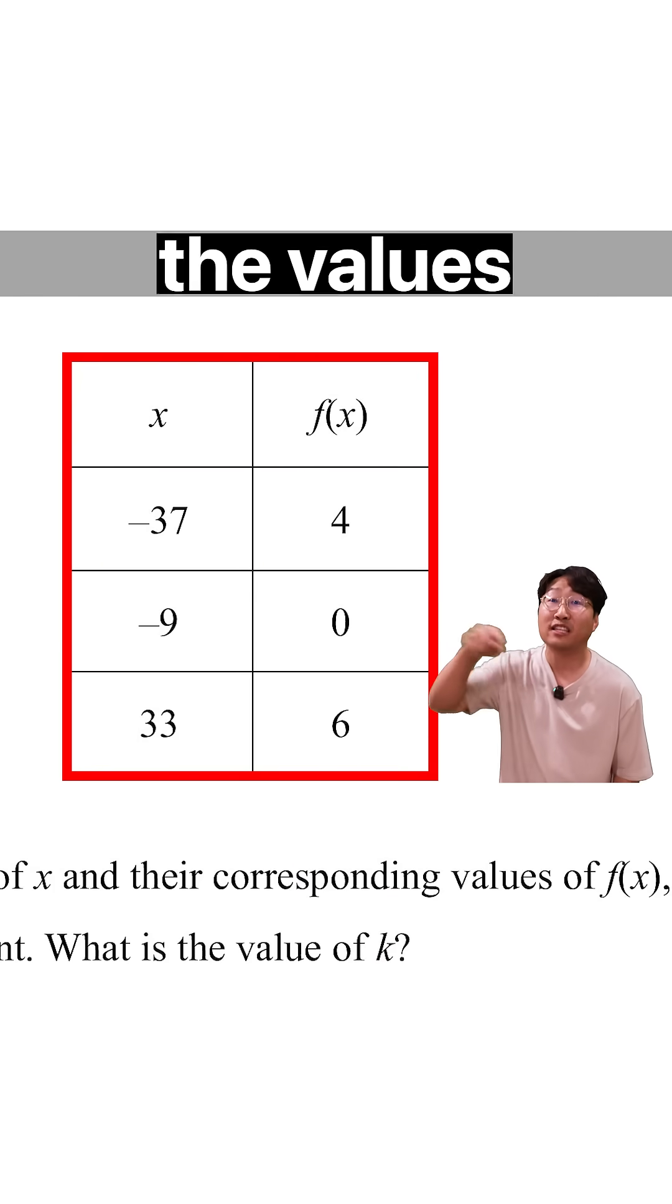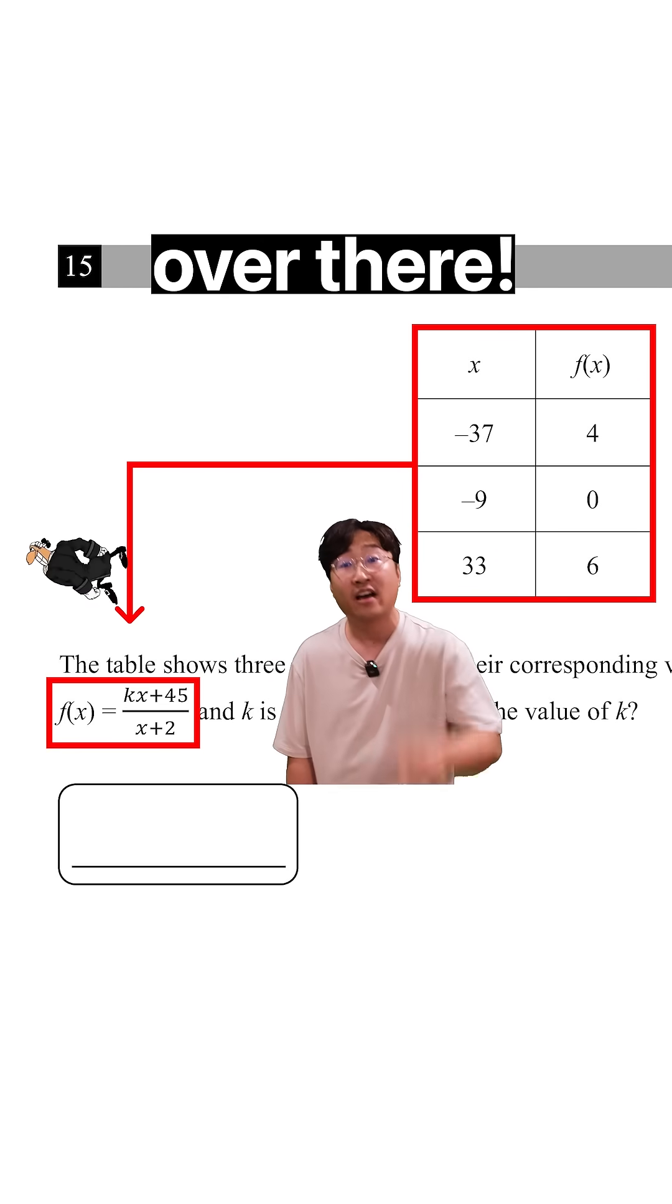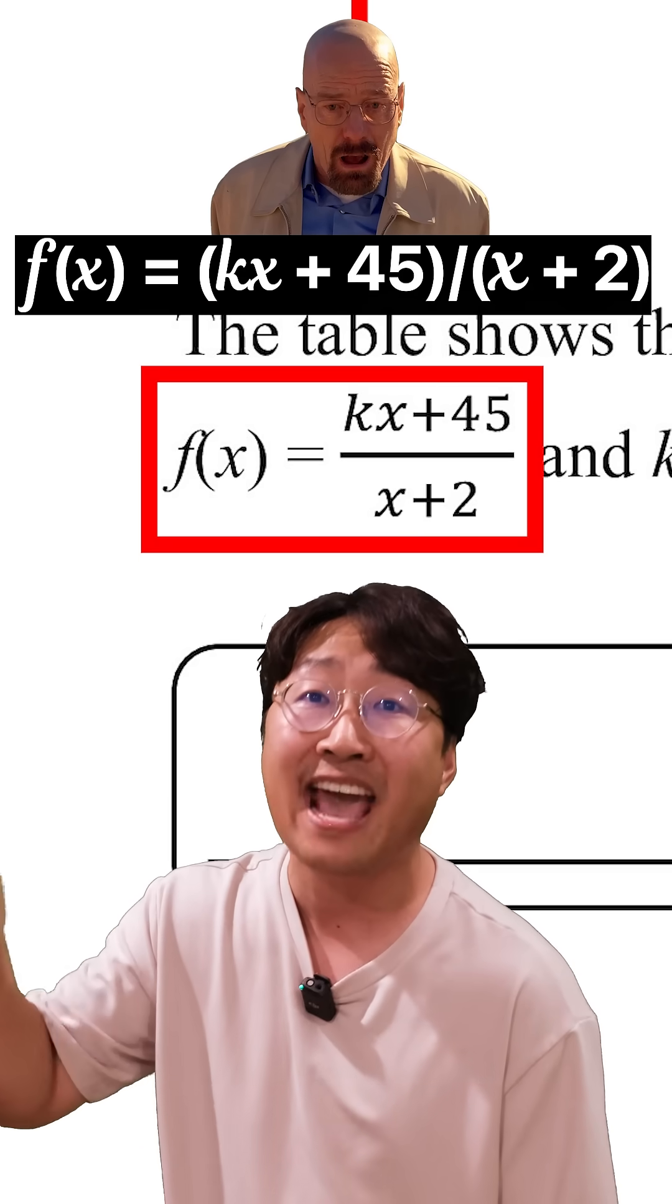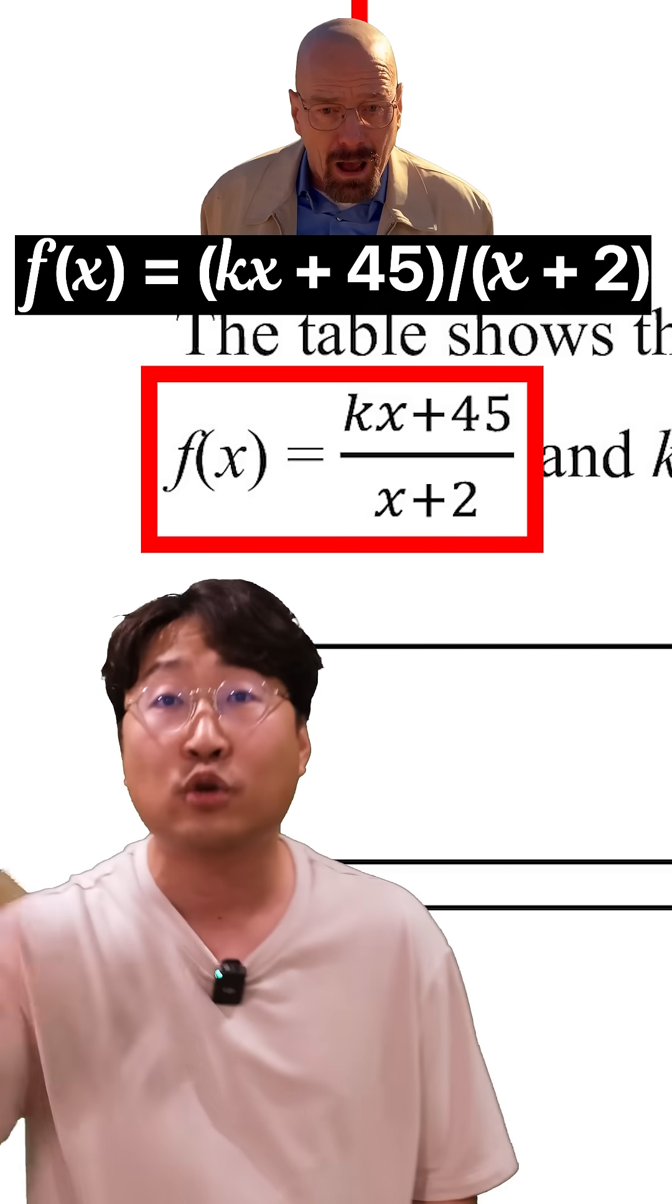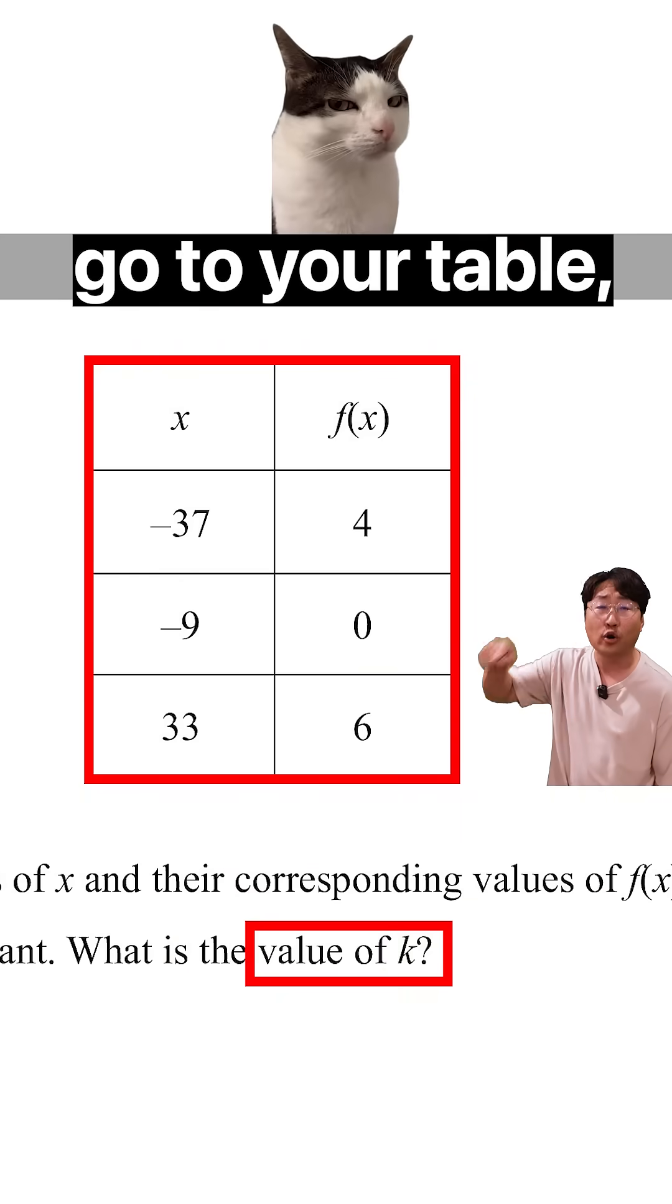We have this table over here and the values in this table are going to apply to that equation. The whole f(x) is equal to (kx + 45)/(x + 2), and the question is asking what is the value of k. Easy as hell man, just go to your table, pick a pair of values, plug them into the function.